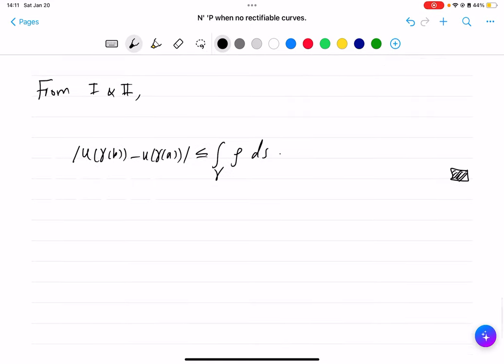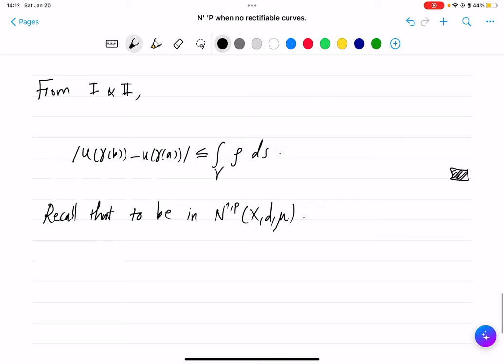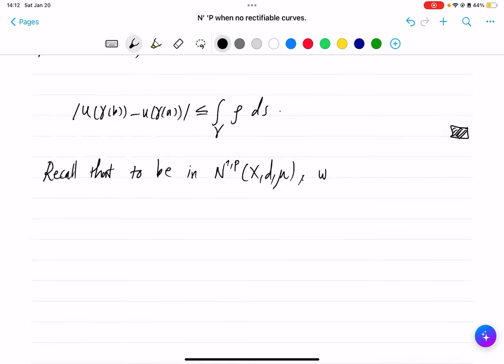Okay, so the constant function L is an upper gradient of this Lipschitz function u. Recall that to be in N^{1,p} of (X, d, μ), so now bring in the measure, a Borel measure on the space X, to be in the N^{1,p} of this space, we need to have u measurable.